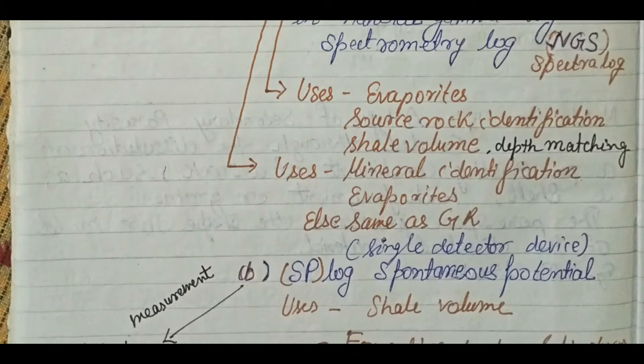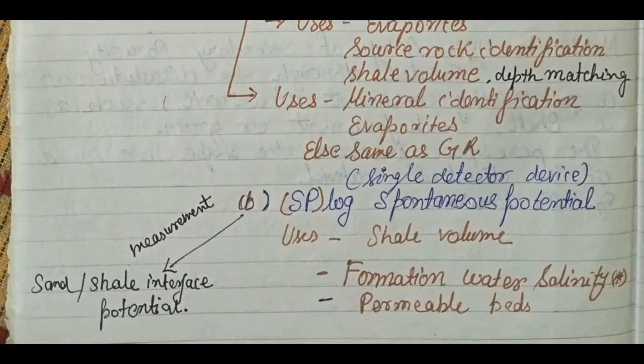The second log in natural sources, also a single detector device, is the SP log. One of the most important uses of the SP log is shale volume estimation, formation water resistivity, identification of permeable beds, and recognition of the shale-sand interface, which creates the measurable potential.